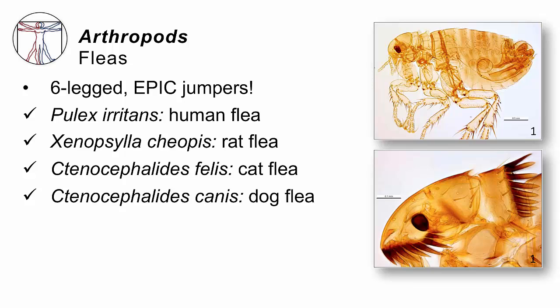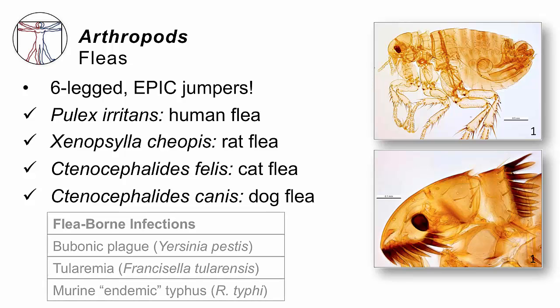Then there's fleas. These are six-legged creatures and they are epic jumpers — they can jump thousands of times their actual body size. The main ones we see are human fleas, Pulex, but also rat fleas, Xenopsylla, and cat and dog fleas, Ctenocephalides. These are usually not vectors of infection, but in particular Xenopsylla — and in some cases Ctenocephalides — can spread infections. Xenopsylla, the rat flea, is what spreads bubonic plague and caused so much trouble in historical Europe. Tularemia, caused by Francisella tularensis, and murine endemic typhus, caused by Rickettsia typhi, can also be spread by flea bites.